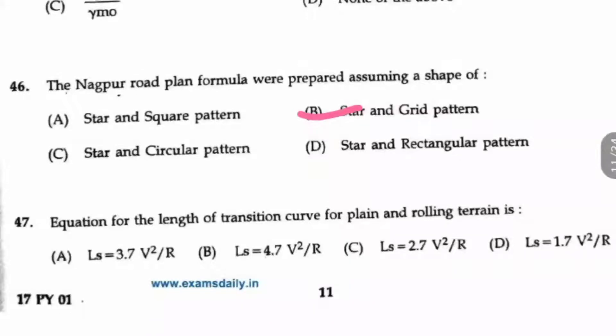Question 47. Equation for the length of transition curve for plain and rolling terrain. So here the length of transition will be 2.7 V squared by R, option C.